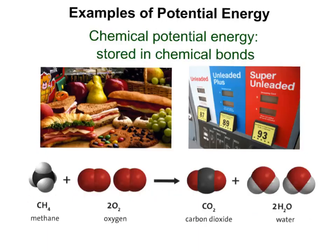Anytime you burn anything, that is chemical potential energy being released. Chemical potential energy becomes thermal energy and radiant energy when burned. For example, methane combined with oxygen — when burned, the bonds are broken, new bonds are made, and energy is released as thermal and radiant energy.